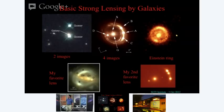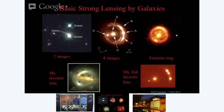There are some very typical configurations of images you see. Either you see two images of the background object, or you can see four images, as in the top middle. Or if you have essentially perfect alignment between you, the lens, and the background object, you have a ring — called an Einstein ring — because every path can get bent into you. The bright thing in the center is the lensing galaxy, and the ring is a background galaxy that's been stretched and distorted into a ring.